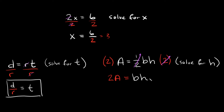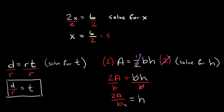Now we just need one more step — we just need to get rid of this b, and in order to do that, I'm going to divide by b. What you do to one side, you do to the other. So then these b's are going to cancel out, and on this side of the equal sign, I'm just left with h. So h is equal to 2a over b. Again, these are just variables, so you can't simplify them anymore. So then this would be your final answer.